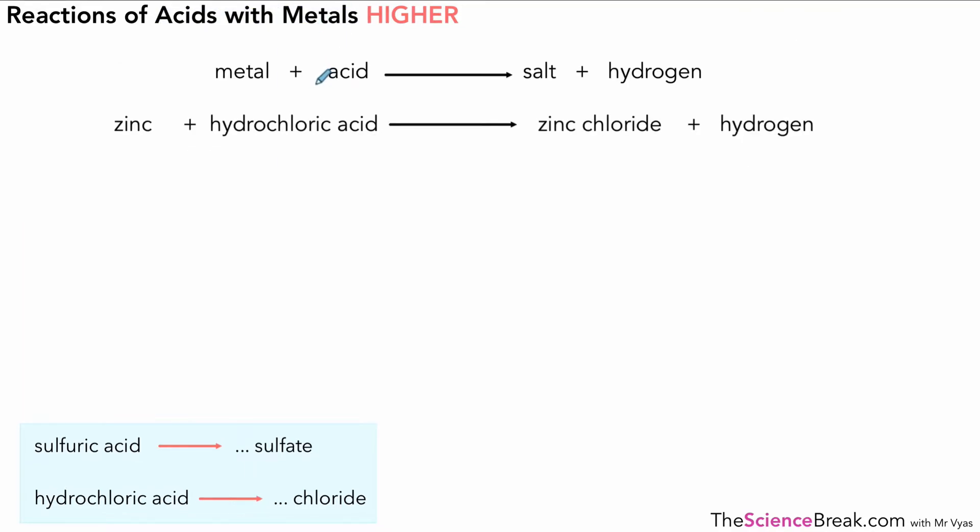Here we've got metal plus acid equals salt and hydrogen again. This time we've got zinc plus hydrochloric acid gives zinc chloride plus hydrogen. Remember, hydrochloric acid will give a salt that's a chloride, in the little blue box there. Here's our symbol equation—it needs to be balanced. You can pause here and practice balancing if you want, but if not, the answer is two in front of the HCl.